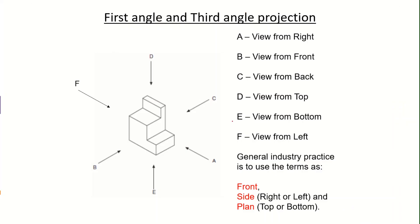Now let's look at the difference between first angle and third angle projection. The third angle projection, most commonly used in the United States, follows ANSI standards — either ANSI metric or ANSI inches. However, in some countries, such as European countries, the first angle projection method is used instead. Let's examine what distinguishes these two methods.